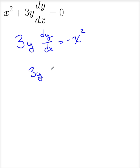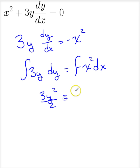3y dy is equal to negative x squared dx. Indeed, we can integrate this. So, 3y squared over 2 is equal to negative x cubed over 3 plus c.